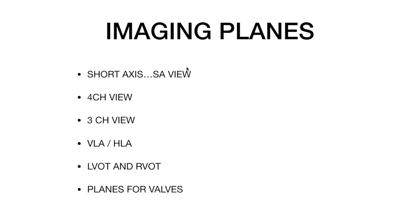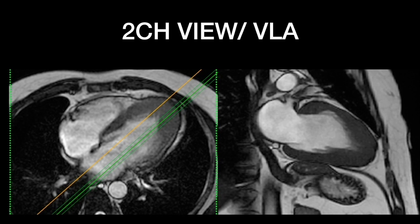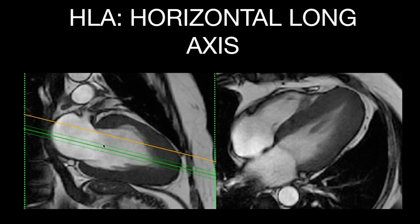Starting with axial, coronal, and sagittal scanogram images: take the axial view, go to the center of the mitral valve, and draw a line through the apex of the heart — this gives the two-chamber or vertical long axis view. From this vertical long axis view, passing lines through the center of the mitral valve toward the apex gives the horizontal long axis view, also called the near four-chamber view, which nicely shows the interventricular septum, lateral wall, and apex.